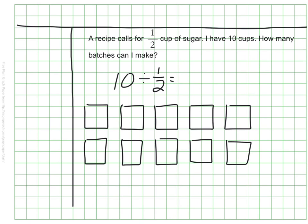Again, I'm starting with my model. And I have my 10 wholes. They represent my 10 whole cups. And I need 1 half at a time. So I'm going to break these into halves. This time, my divisor is just 1 half. So I don't need to group anything together. I just need to see how many halves there are.